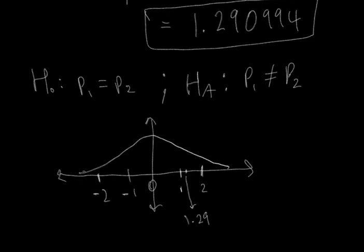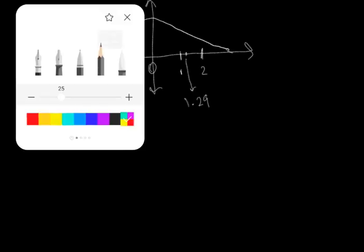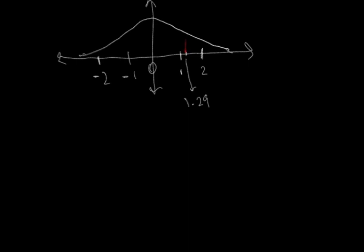The probability, or the area, under this curve that's greater than 1.29 is this. I'm going to fill it in in different colors just so you can see. That's equal to this area right here, which if you do the calculation comes out to 0.0983, approximately.